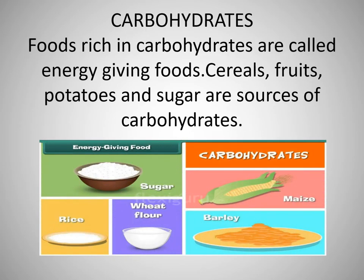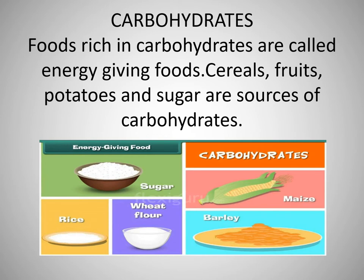The first component of food is carbohydrates. Carbohydrates are the energy-giving food that gives us energy to work, study, play, and do all other daily activities. You must be seeing the pictures below — these are the sources of carbohydrates which we eat every day. For example: sugar, rice, wheat flour, maize, and barley.